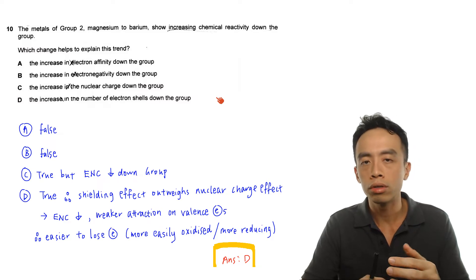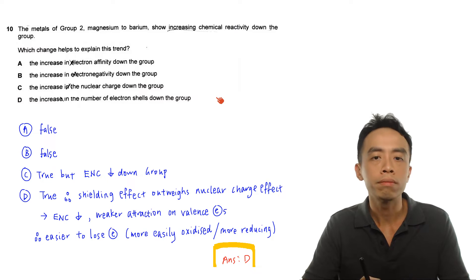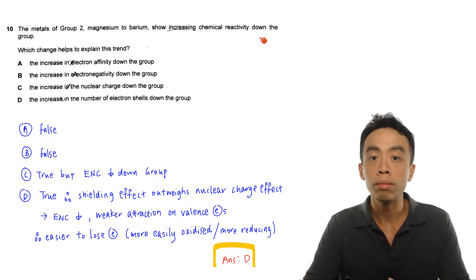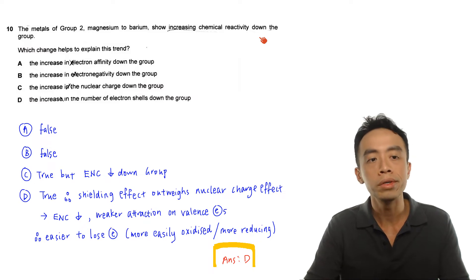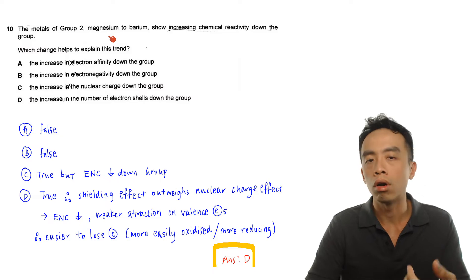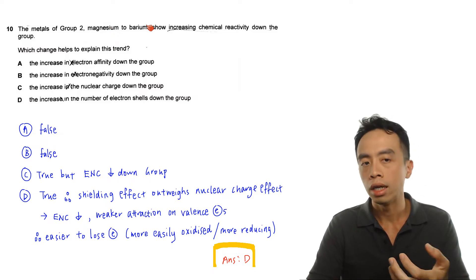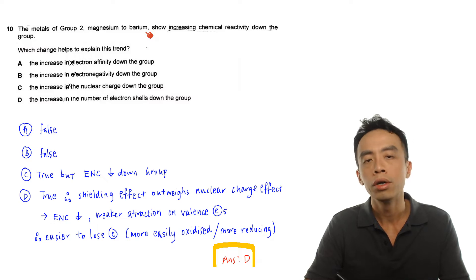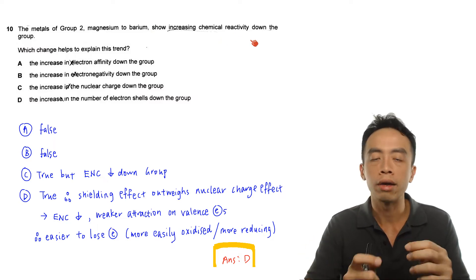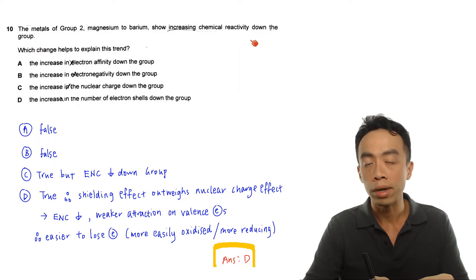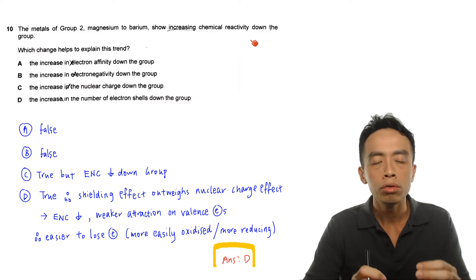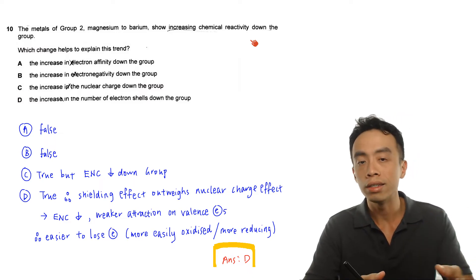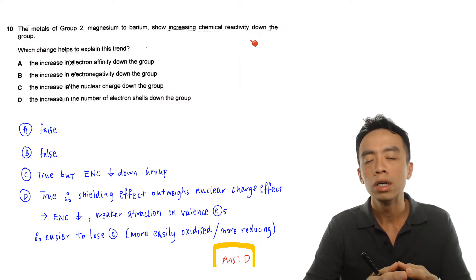If I consider metals — because metals always undergo oxidation, which is the loss of electrons — increasing chemical reactivity is equivalent to it becoming easier and easier for the Group 2 metal to lose its electrons as you go down the group. So from magnesium to barium, it becomes progressively easier to lose electrons. Chemical reactivity of metals is tied directly to the ease of oxidation, and this is related to effective nuclear charge — the overall attraction between the nucleus and the valence electrons.